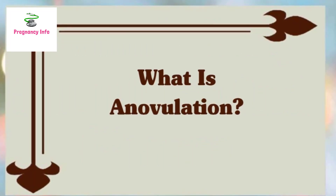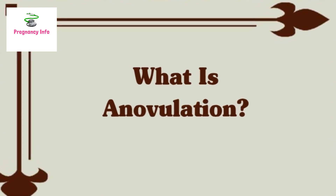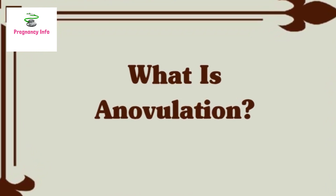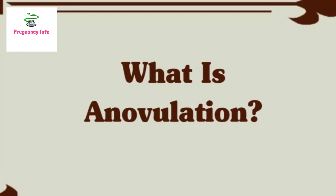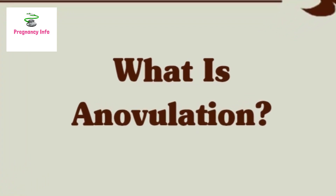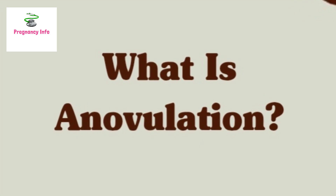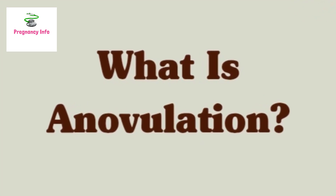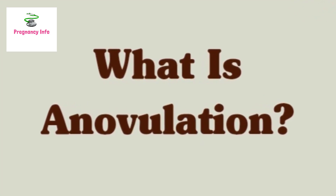What is anovulation? Anovulation happens when an egg doesn't release from an ovary during your menstrual cycle. An egg is needed to have a pregnancy. Since multiple hormones are involved in ovulation, there are many causes of anovulation.